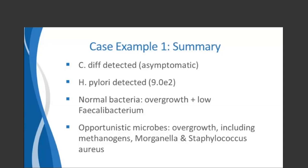Looking at the big therapeutic picture: in addition to addressing organisms and dysbiosis that may be promoting mast cell activation, if key normal bacteria are too low, that may be another factor contributing to the imbalance that increases mast cell activation. Coming back to the overall case summary: C. diff and H. pylori were detected — H. pylori is one of the organisms that may increase mast cell activation in the stomach, possibly a minor contributor here. The normal bacteria overgrowth reflects increased fermentation and gas production. Low Faecalibacterium combined with opportunistic microbes, especially Morganella and Staph aureus, can further drive mast cell activation — Staph aureus stimulates mast cells, and Morganella contributes by producing histamine as a known significant histamine producer.